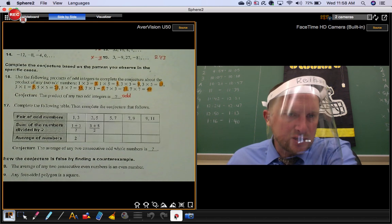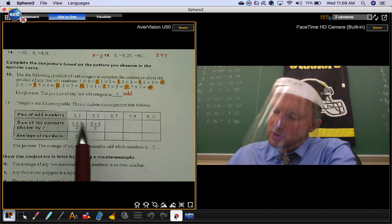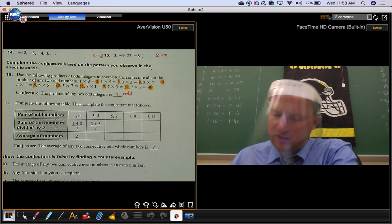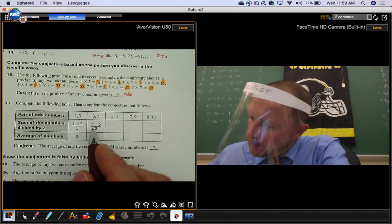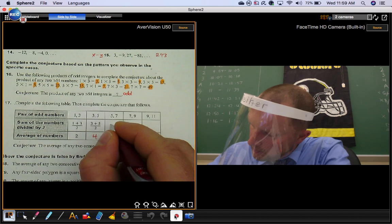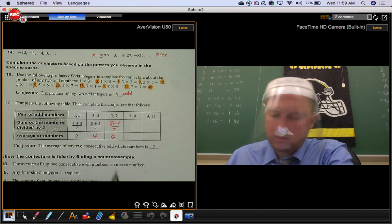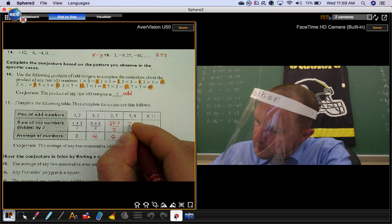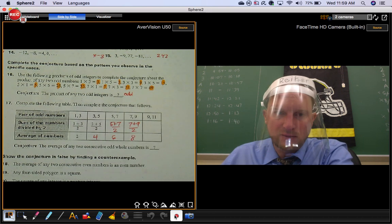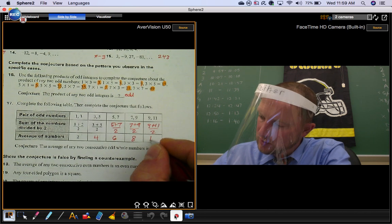Number 17, they ask you to complete the following table, then complete the conjecture that follows. So they're giving you pairs of odd numbers. They want you to sum the numbers and then divide by 2. So 3 plus 5 is 8, divided by 2 is 4. 5 plus 7 is 12, divided by 2 is 6. I think you see a pattern already. 7 plus 9 is 16, divided by 2 is 8. 9 plus 11 is 20, divided by 2 is 10.